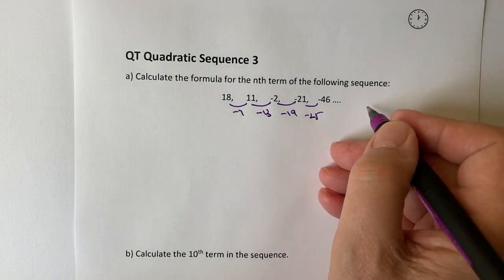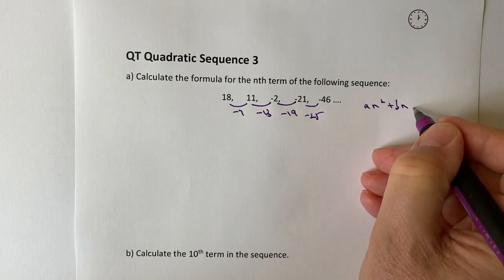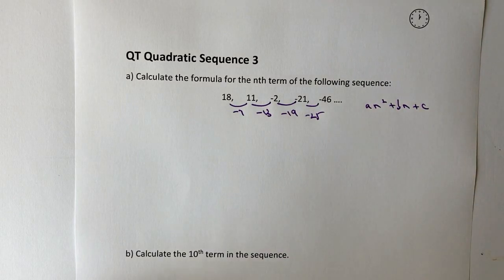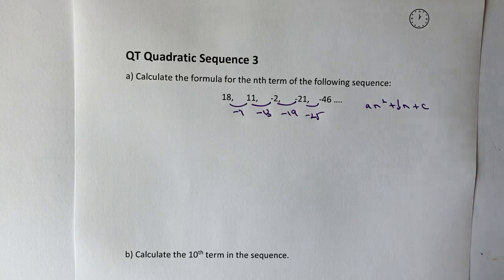So we're going to be effectively creating something that's going to look like an squared plus bn plus c, and our job today really is to find out the value of a, the value of b, and the value of c.